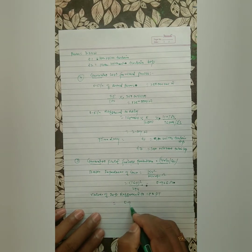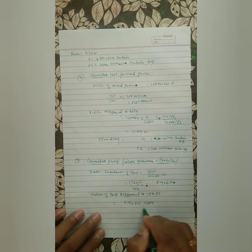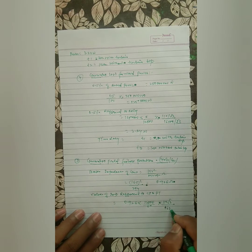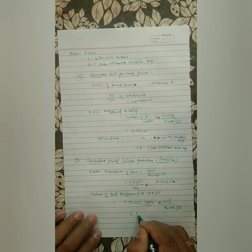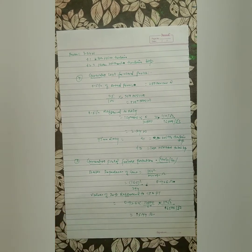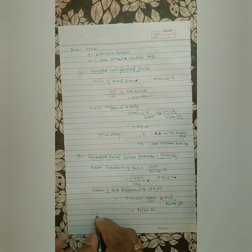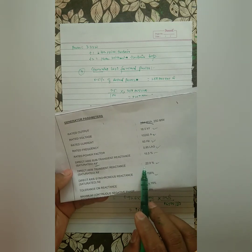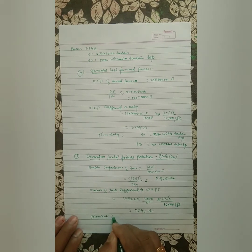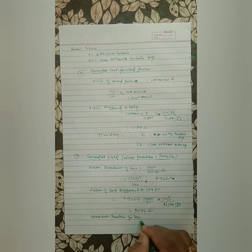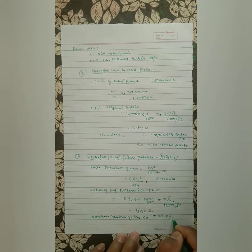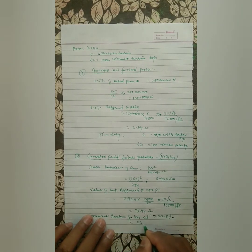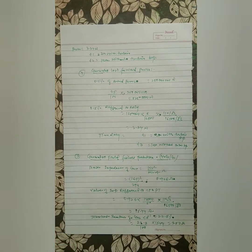The value of impedance referred to CT and PT is 0.926 × (CT ratio / PT ratio) = 0.926 × (12500/5) ÷ (16500/√3 divided by 110/√3), which gives 15.44 ohm. The transient reactance of the generator Xd' is 22.8%, so Xd' in ohm = 22.8/100 × 15.44 = 3.52 ohm.